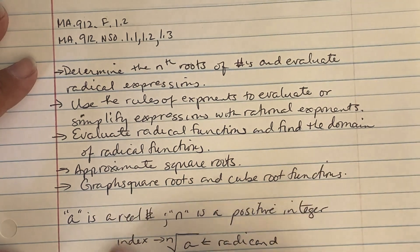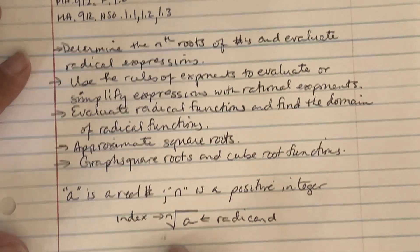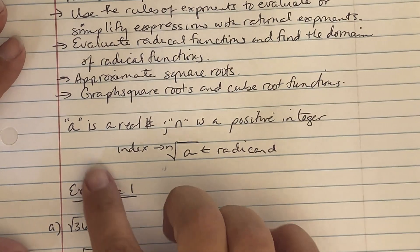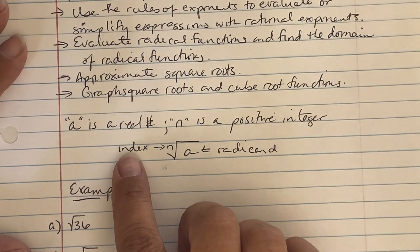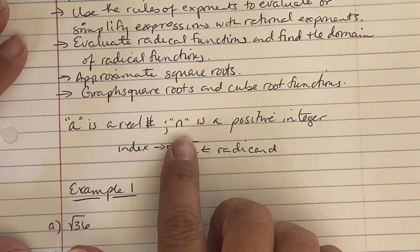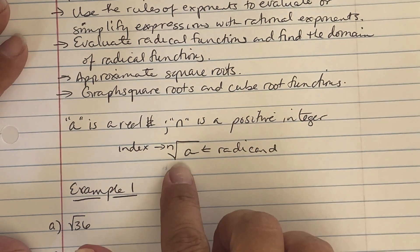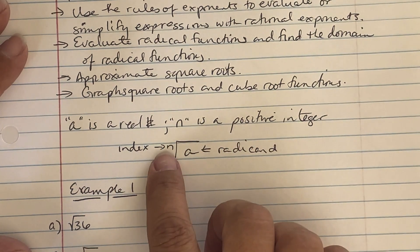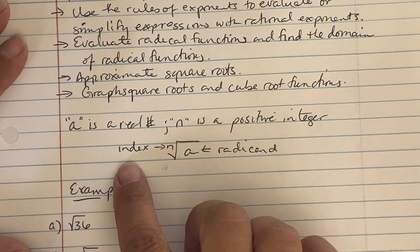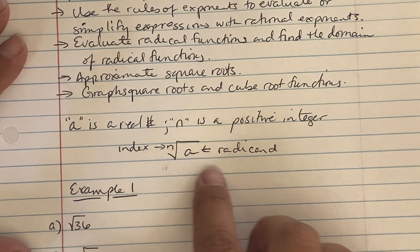So a is a real number and n is going to be a positive integer. If you see the nth root of a, the little n is called the index, and the value inside a radical is known as the radicand.